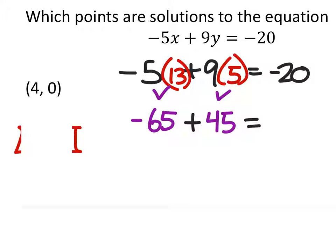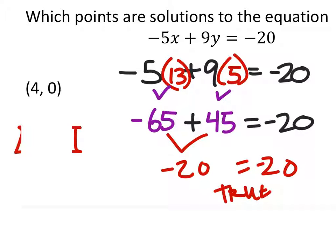And this equals negative 20. So when we combine these two, negative 65 plus 45 is negative 20. So this is true. Negative 20 does equal negative 20. So yes, this is a solution.